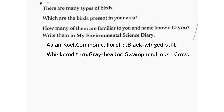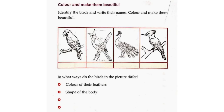Some of the birds listed are: Asian Koel, Common Tailor Bird, Black-Winged Stilt, Whiskered Tern, Grey-Headed Swamphen, and House Crow. Identify the birds, write their names, and colour them to make them beautiful.